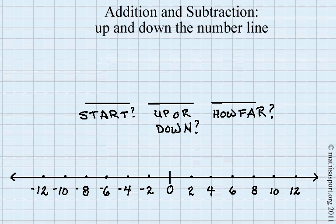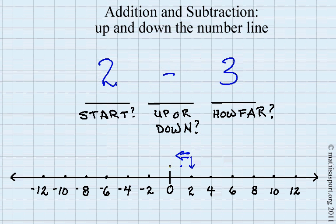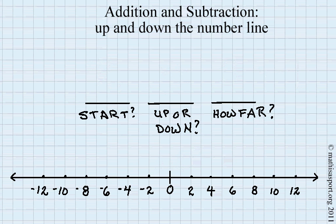Let's try 2 minus 3. Where do we start? We start at 2. Do we go up or down? This minus sign tells us we go down. How far do we go? We go three: 1, 2, 3. That's how we know our answer is negative one.